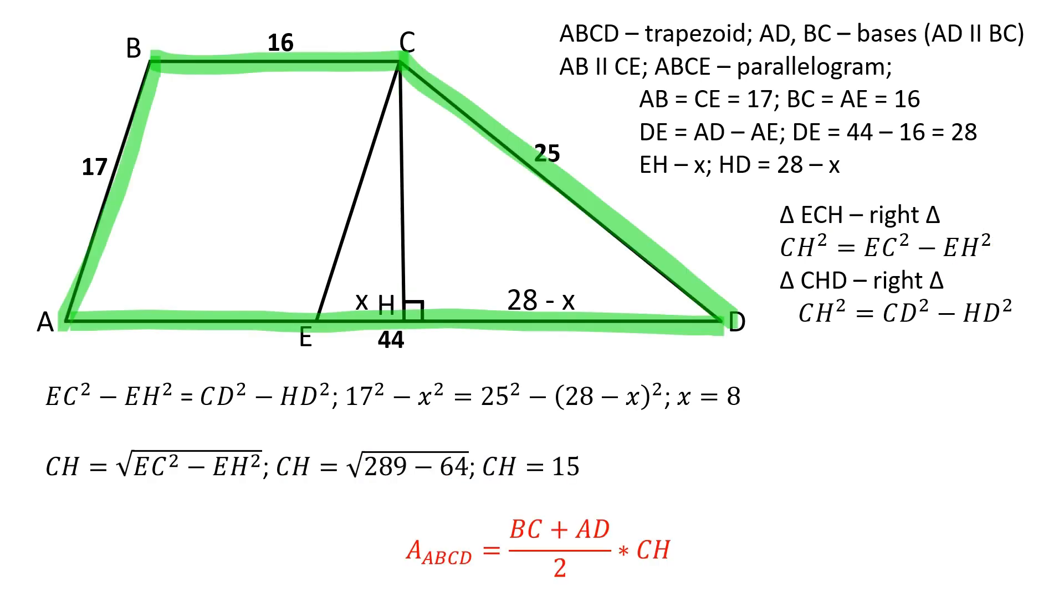The area of the trapezoid ABCD is equal to BC plus AD over 2 times CH. The area of the trapezoid ABCD is equal to 450 square units.